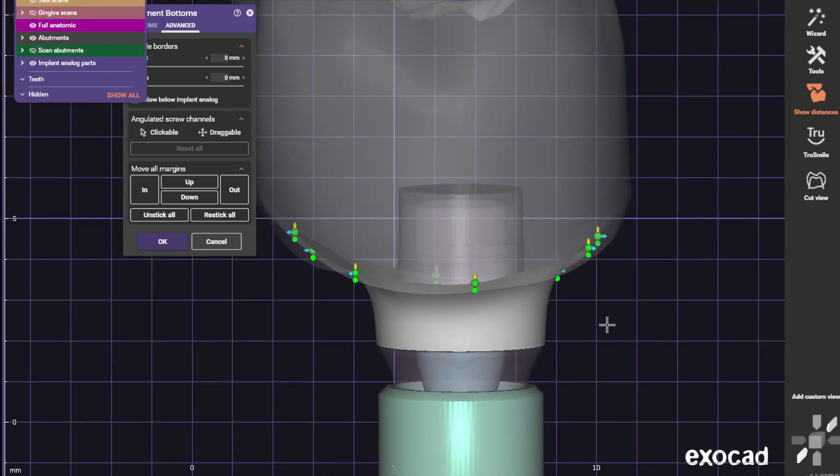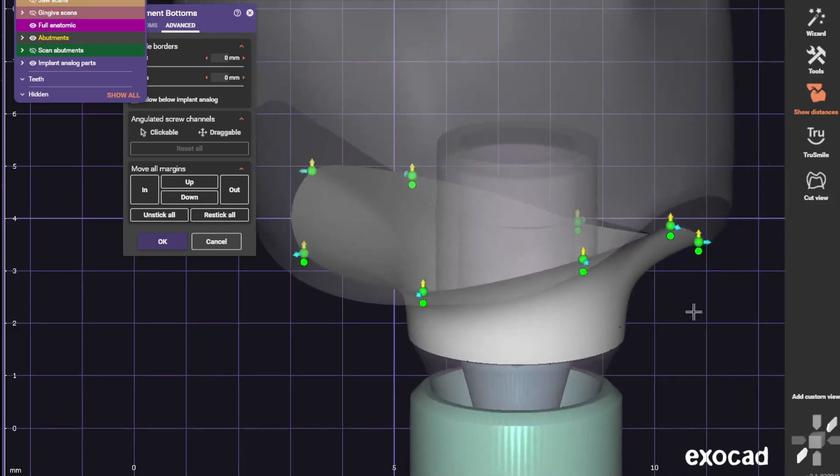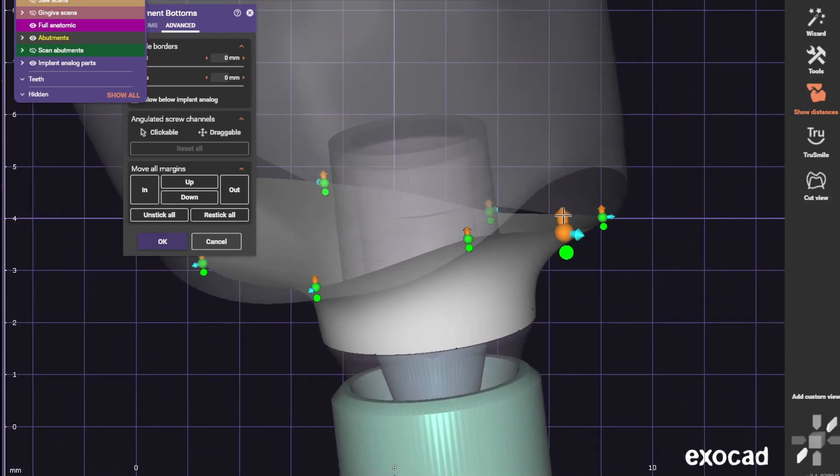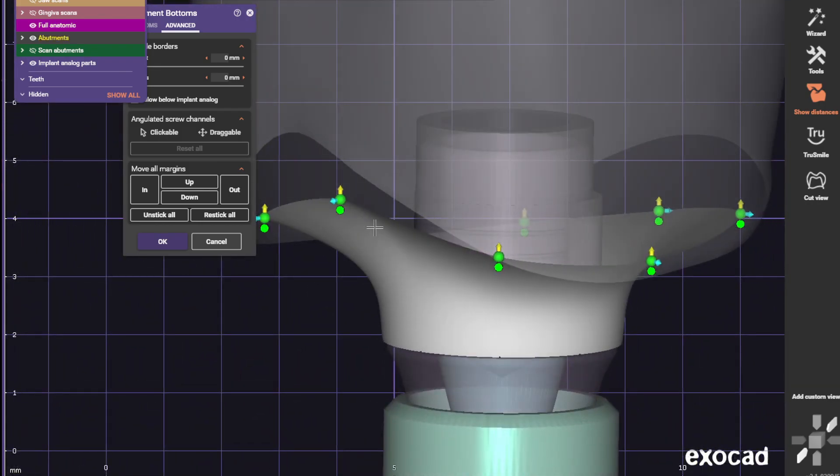Now we'll go ahead and adapt those. See this little area right here? That's a food trap, so just drop this down. Same with right here, it's another food trap. Drop this down.